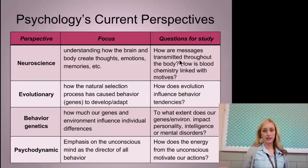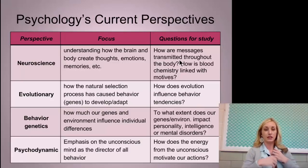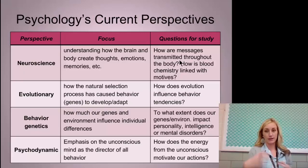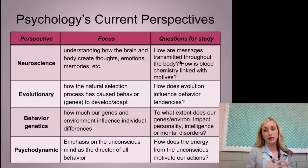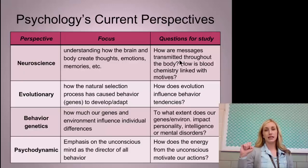With neuroscience, the focus is on understanding how the brain and body create thoughts — how our physical makeup, things like neurotransmitters and neurons, contribute to our mental processes. The key questions are: how are messages transmitted through the body — the answer being through neurons — and how is blood chemistry linked with motives? Neuroscience, also called the biological perspective, covers anything with the brain, body, and anything physical.